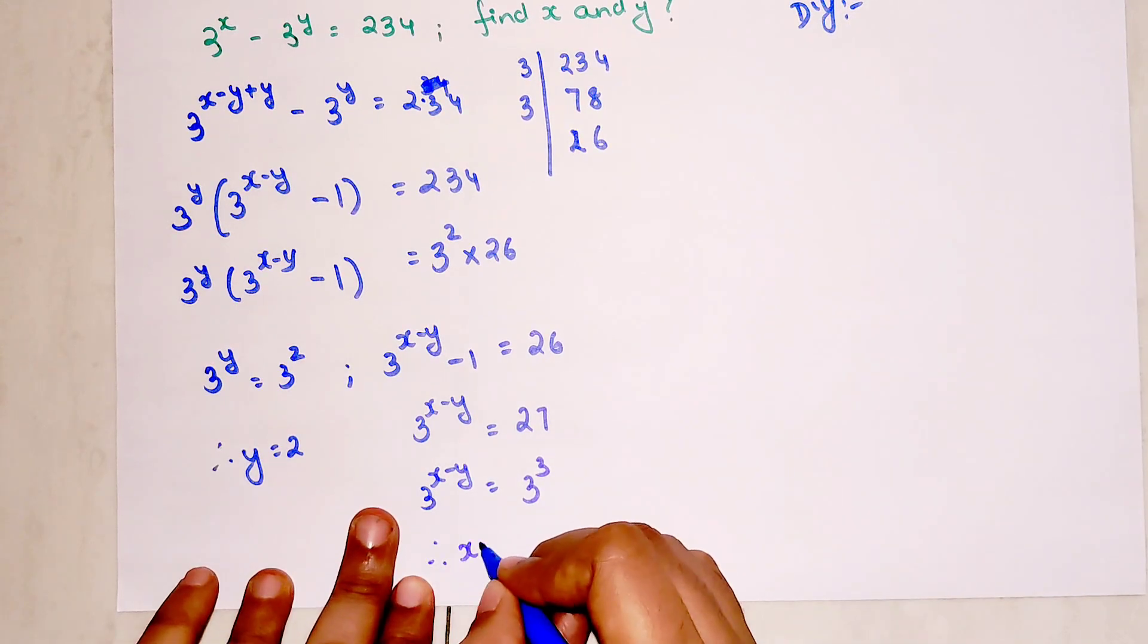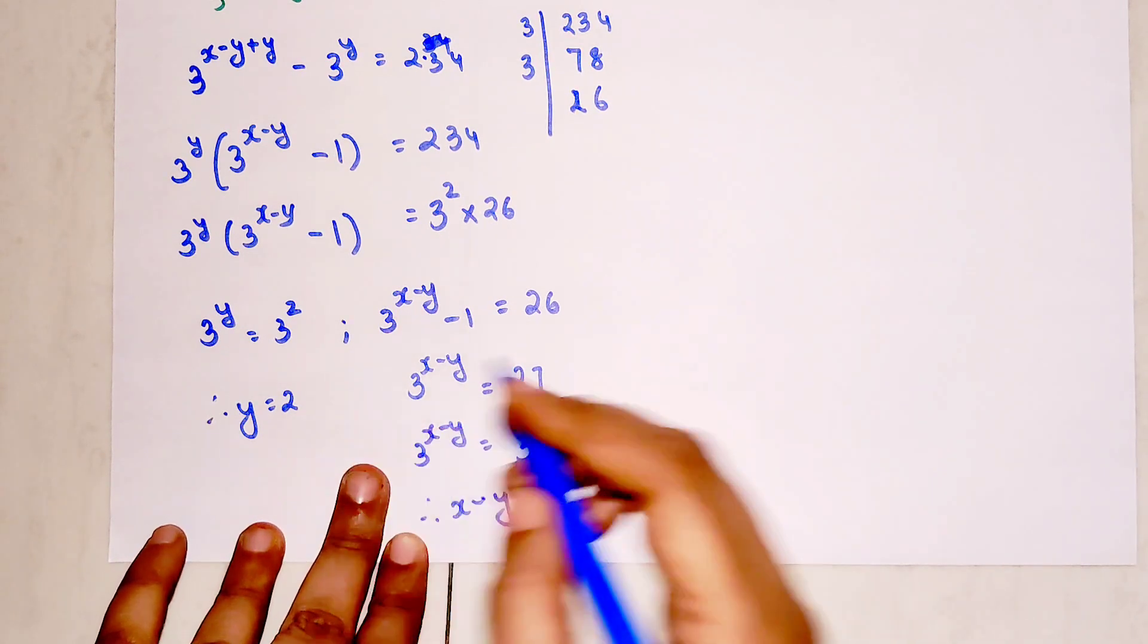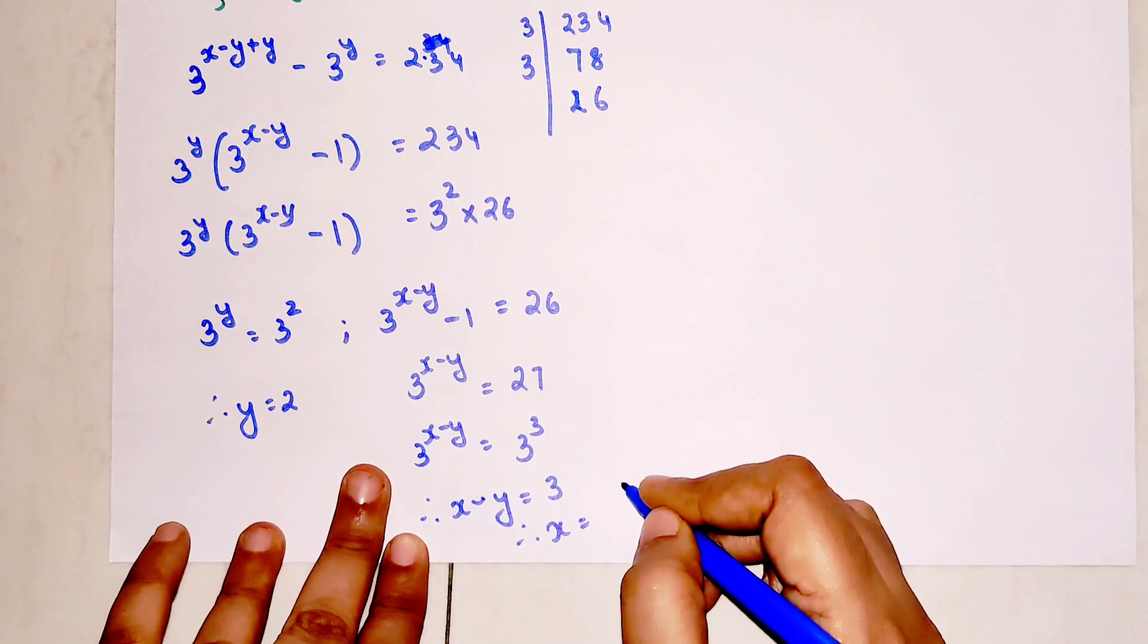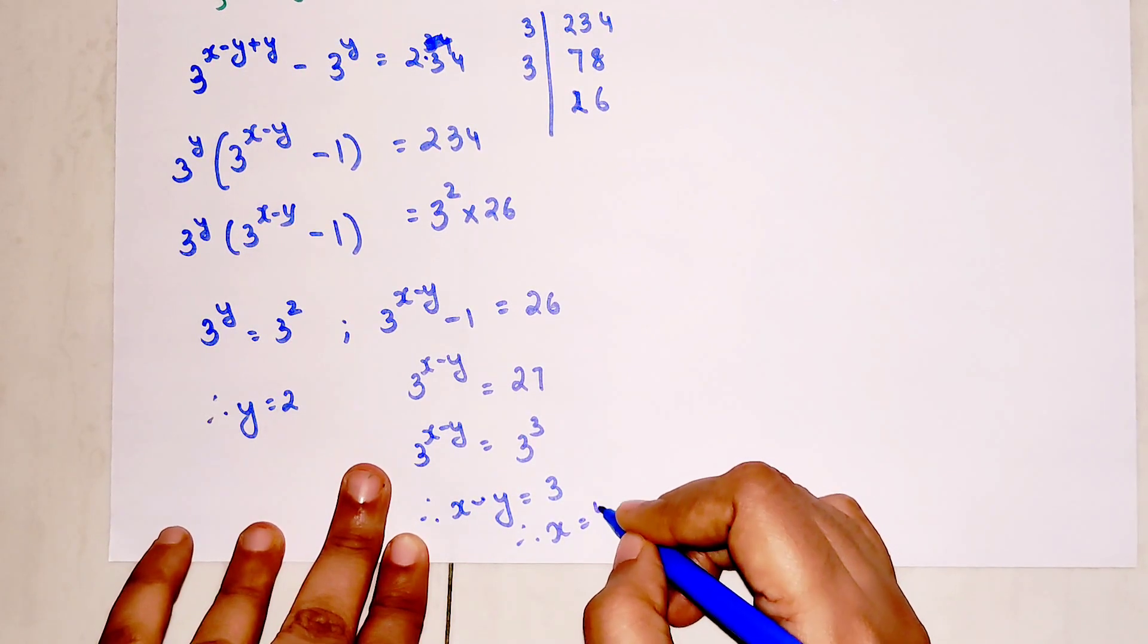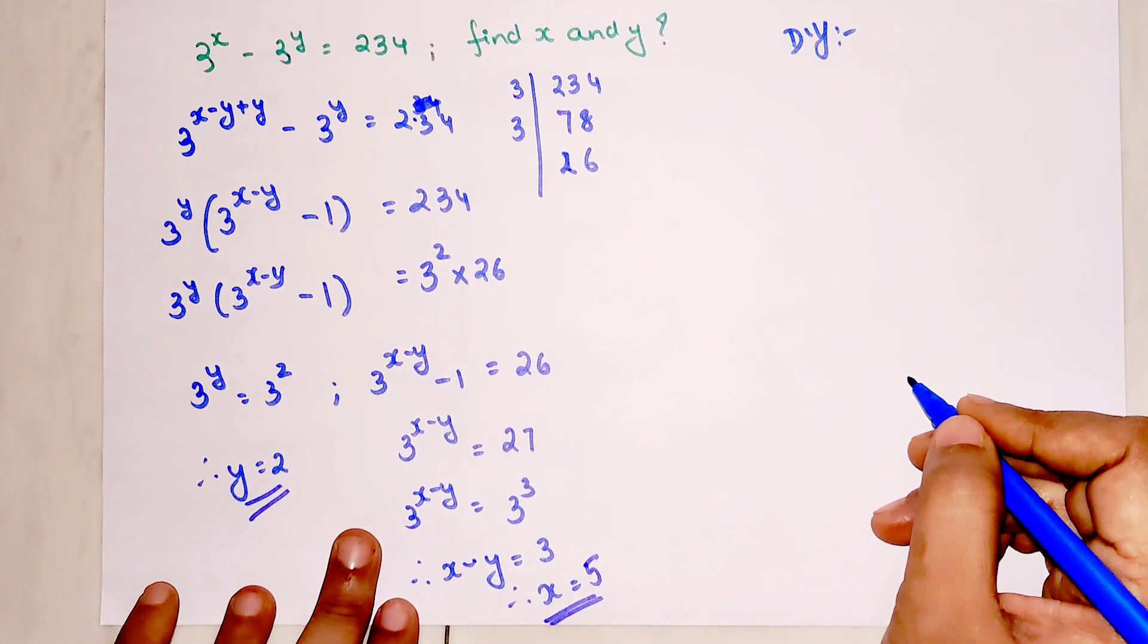This is nothing but 3 raised to x minus y equals 3 raised to 3. Therefore x minus y equals 3, and the value of y is 2, therefore x equals 3 plus 2, so x equals 5. So these are the two values of x and y.